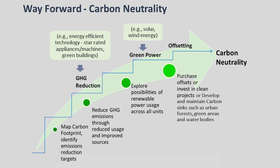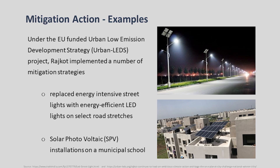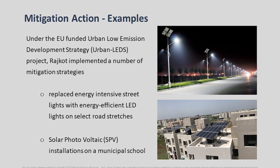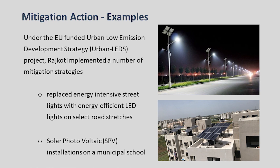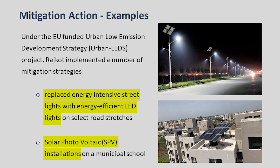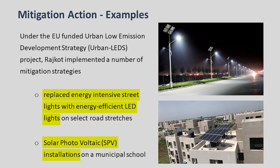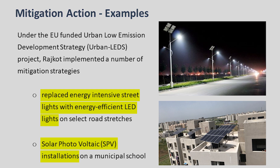After quantifying different emission sources, GHG inventories can be used for setting mitigation goals and selecting different strategies at the city level. Cities can strive towards the goal of net-zero carbon or carbon neutrality, where GHG emissions are offset by energy efficiency measures in different sectors or absorbed by carbon sinks such as urban forests. One such example is the EU-funded urban low-emission development strategy of Rajkot City in Gujarat, which implemented mitigation strategies including replacement of energy-intensive streetlights with LED lights and installation of solar panels on a municipal school building.